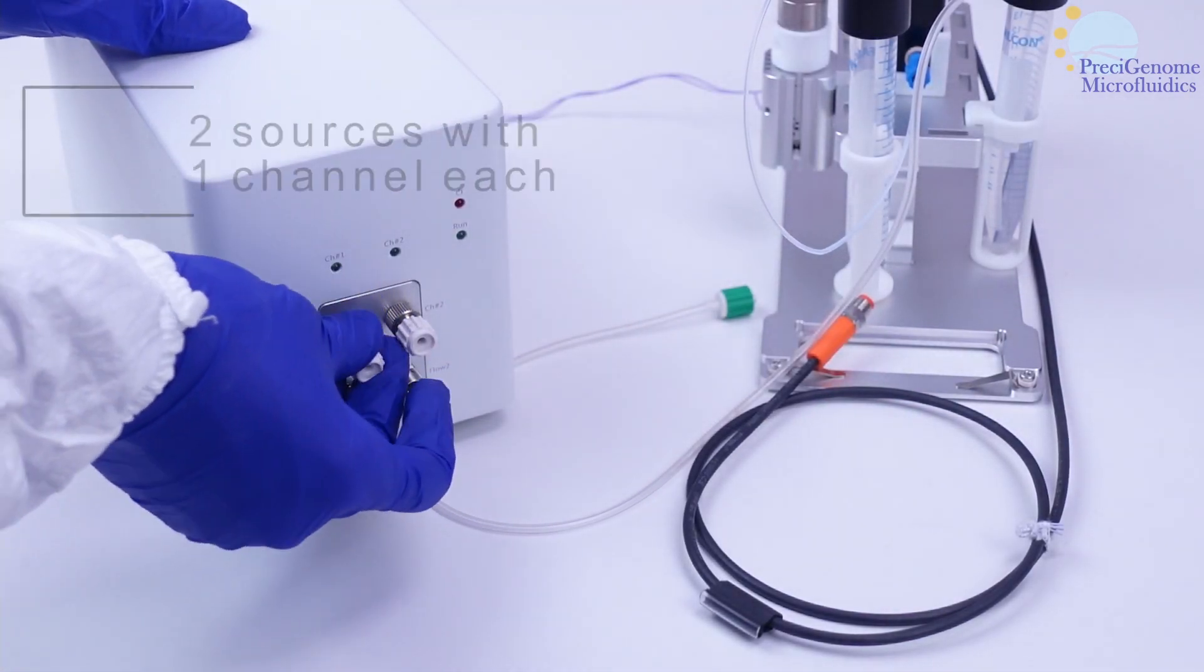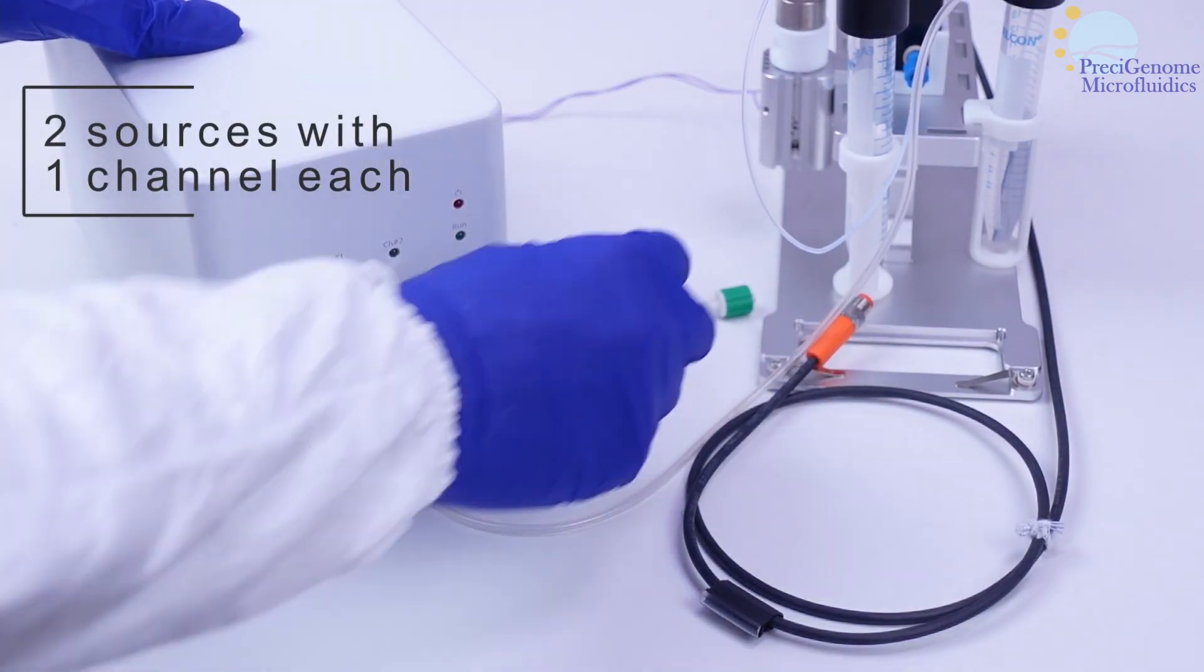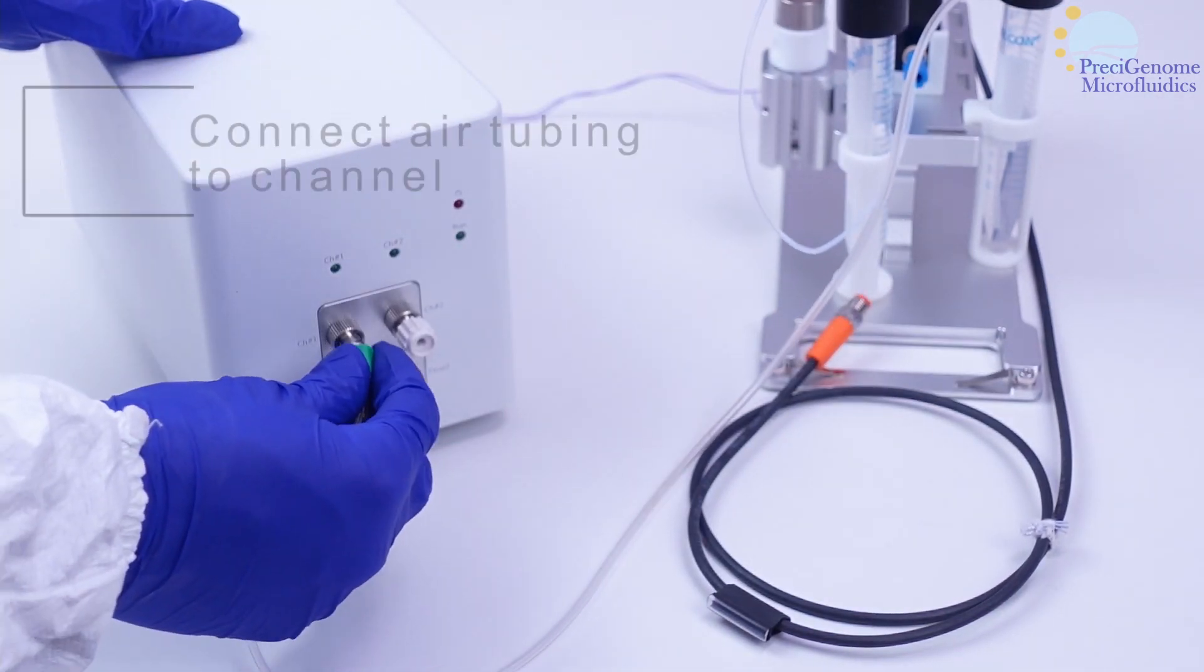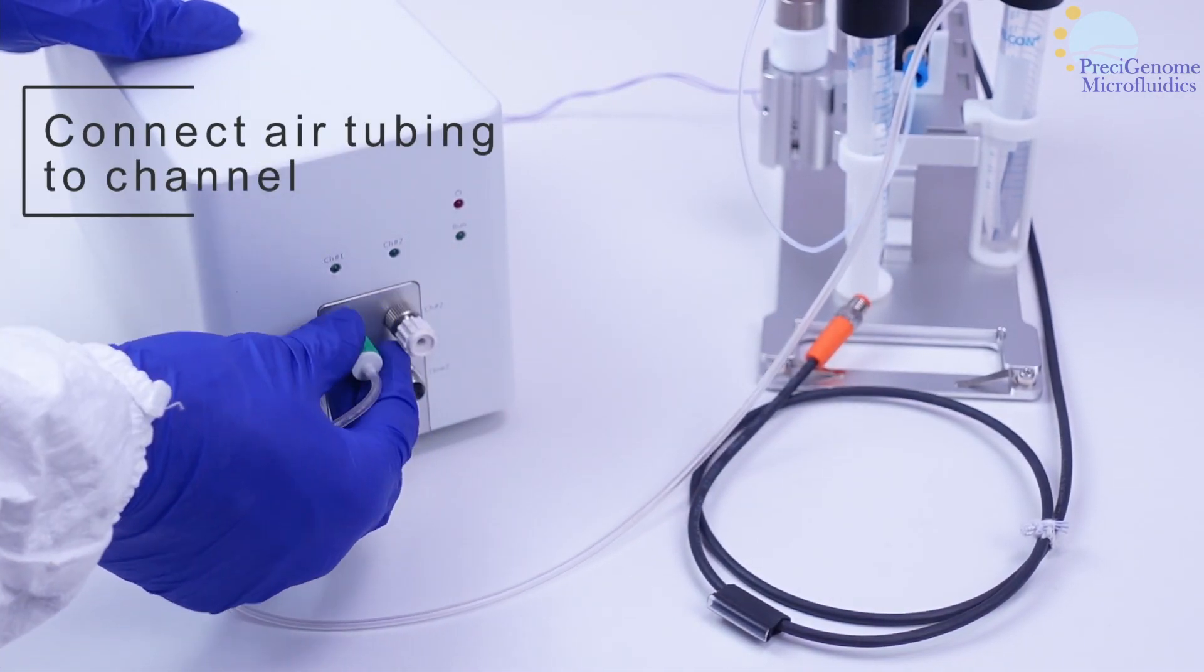The iFlowLite features two independent sources with one channel each. These connect to other components with Tigon tubing.